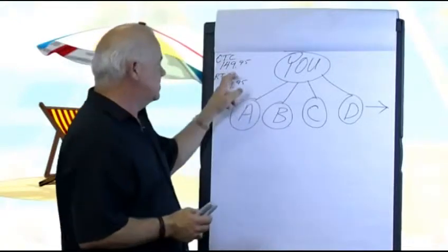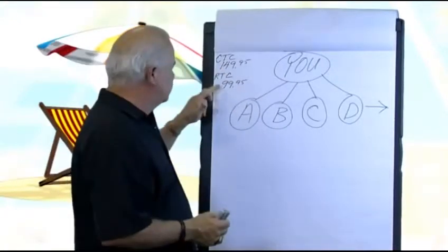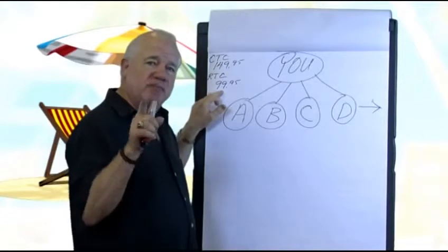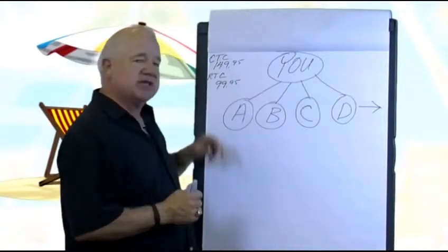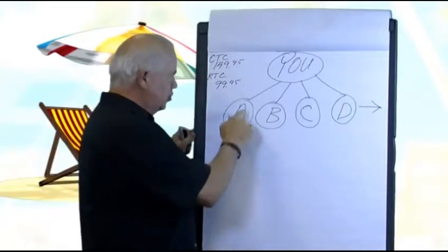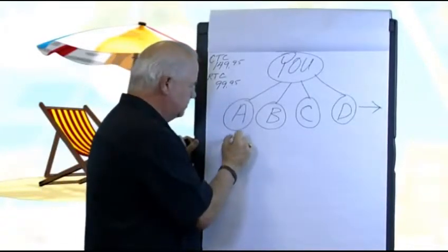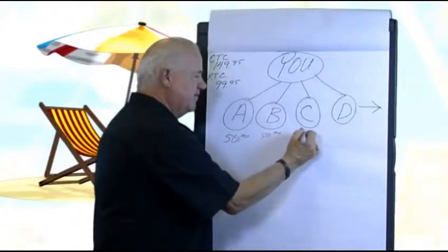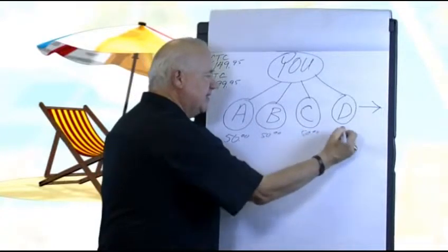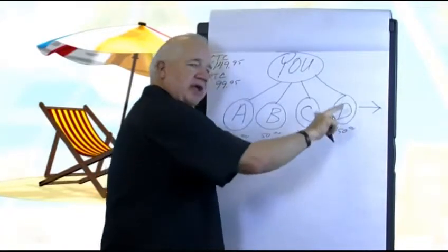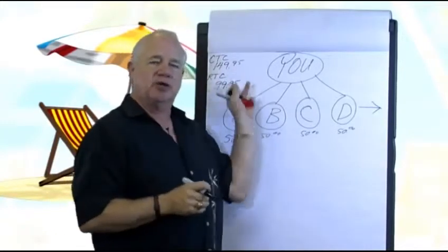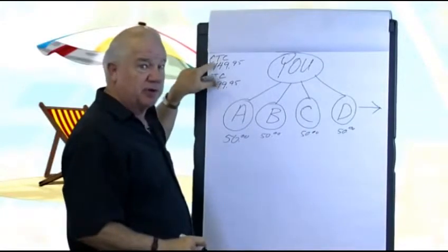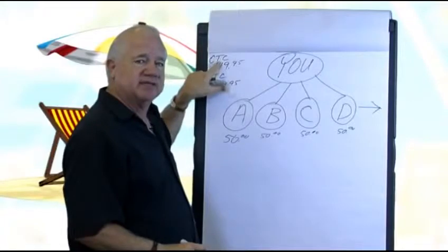So let's look at the CTC package. When someone joins the program, the only difference in RTC and CTC is when you sell one of these packages, if you sell the RTC, you make $25 a sale. If you sell the CTC, the best package, when you sold it to A, you made $50. When you sold it to B, you made $50. C, $50. And D, $50. And it would continue on every person you personally recruit and sell one of the packages to. You make a personal sale of either $25 on the RTC or $50, double your pay, on the $149.95 CTC package.